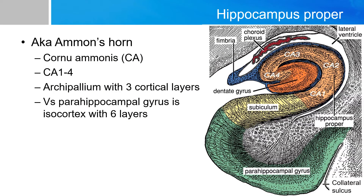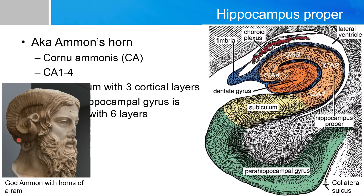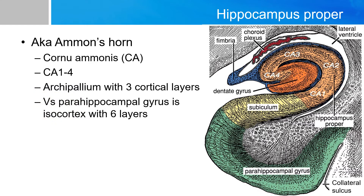The hippocampus proper is named cornu ammonis because its shape looks like the horn of the Egyptian or Greek god Amon — hence the name. There are four segments: CA4, CA3, CA2, and CA1, with CA4 immediately adjacent to the dentate gyrus and CA1 adjacent to the subiculum. A helpful memory trick: the letter D is the fourth letter in the alphabet, and the dentate gyrus is right next to CA4.